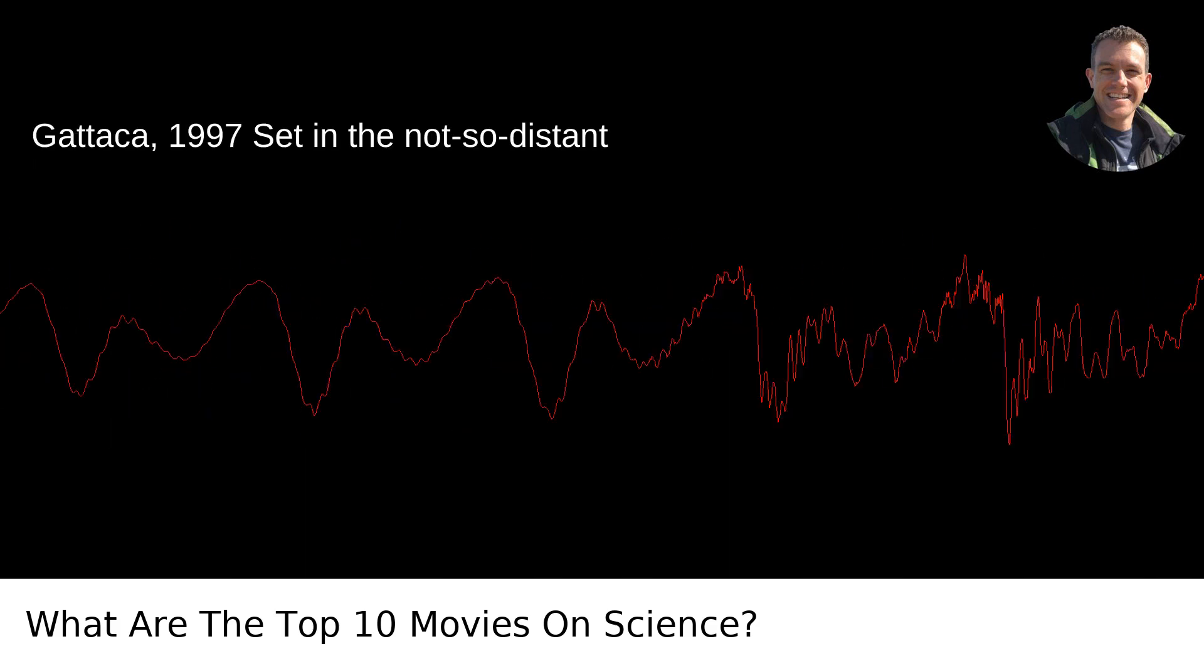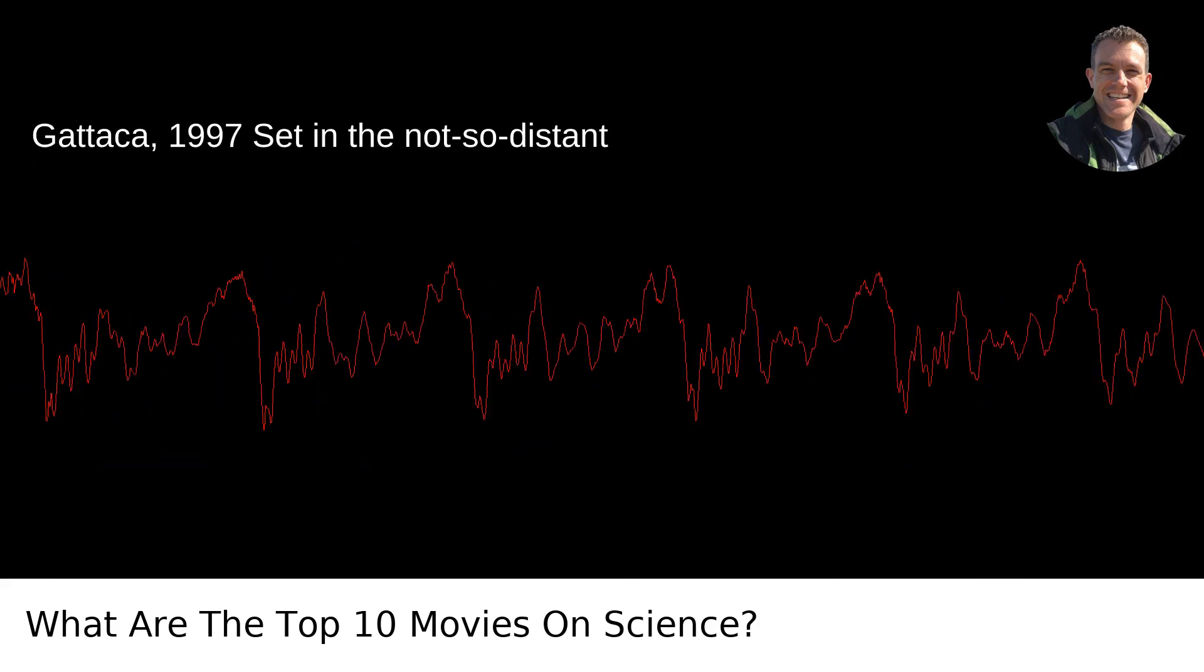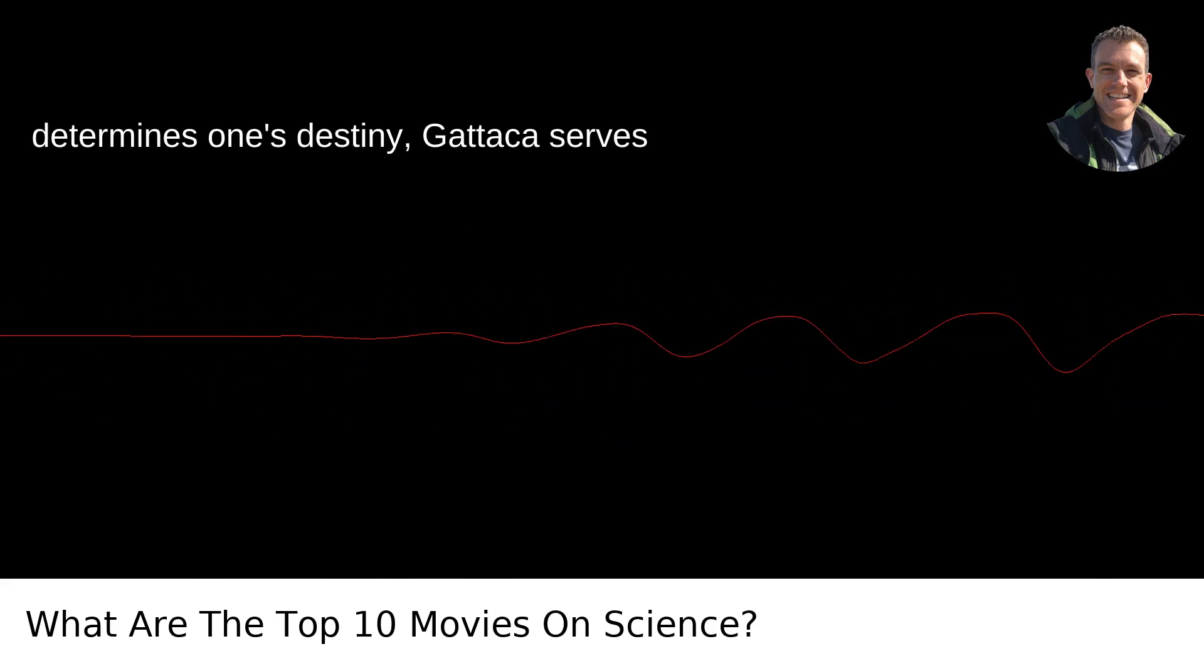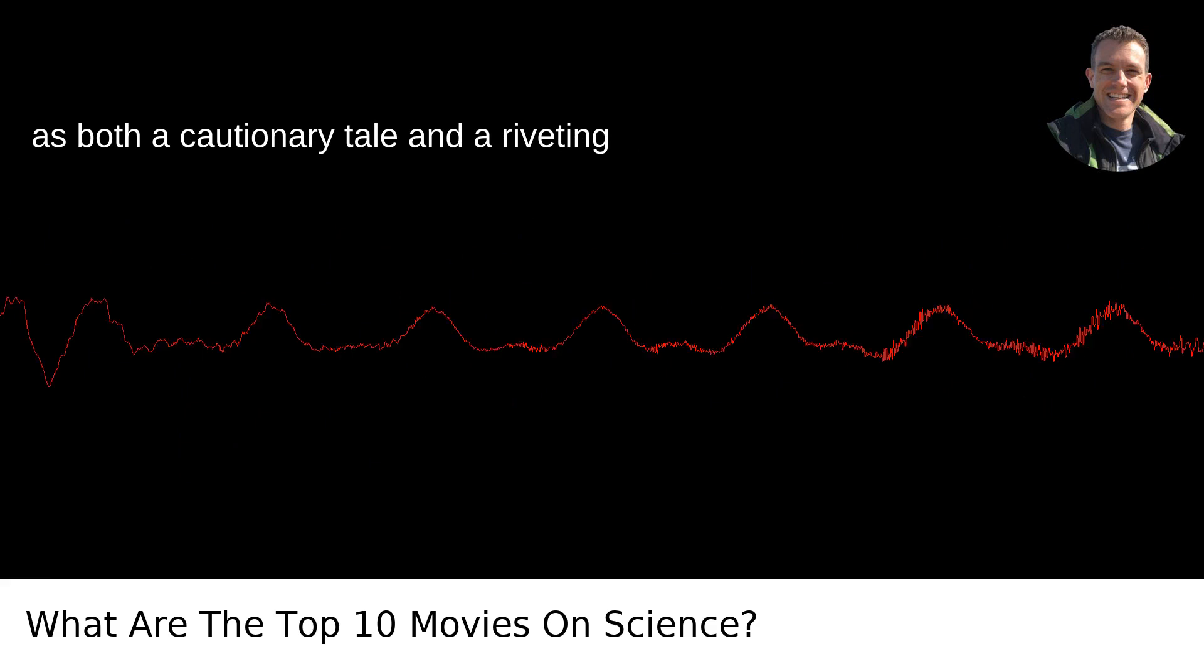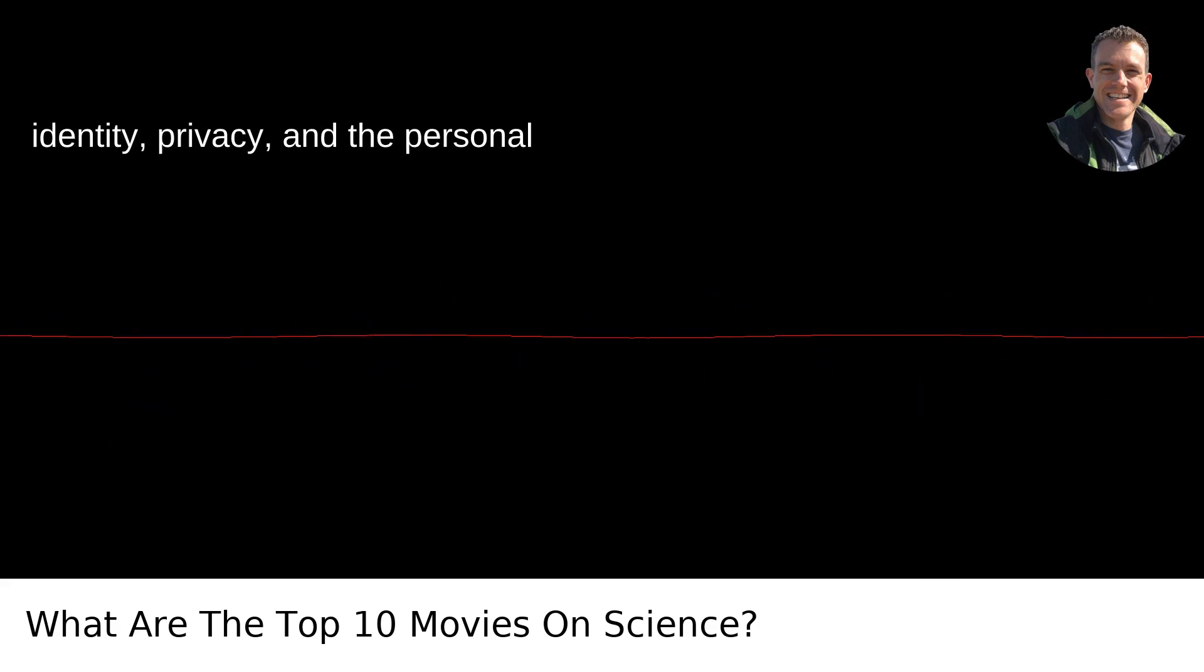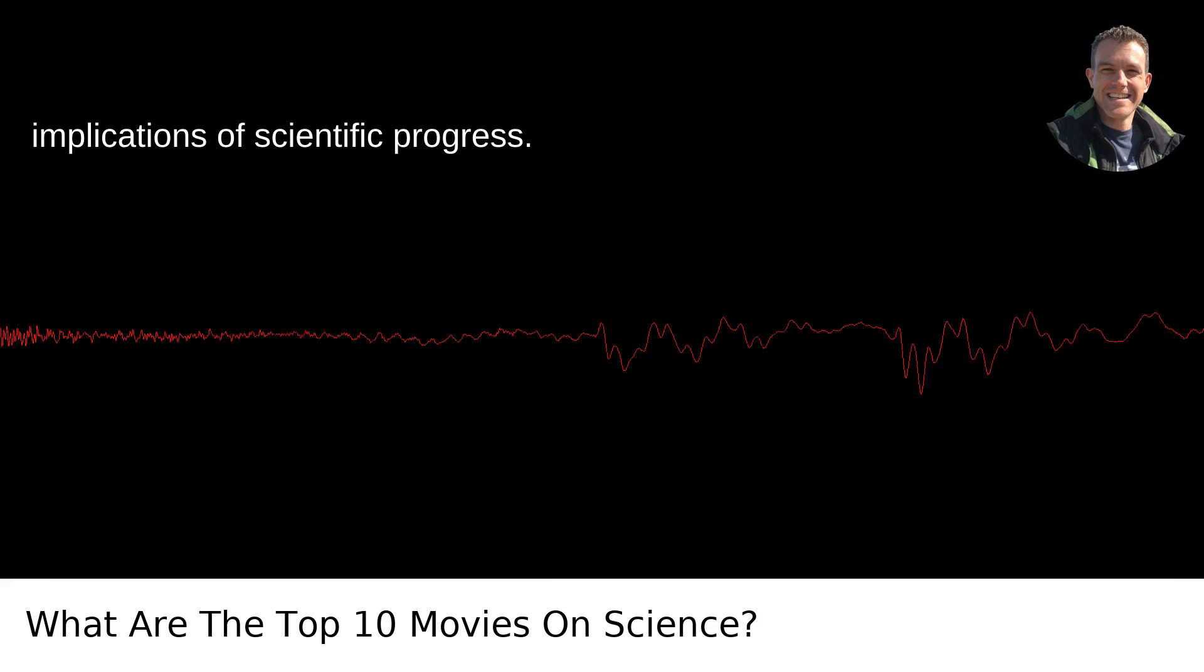10. Gattaca, 1997. Set in the not-so-distant future where genetic modification determines one's destiny, Gattaca serves as both a cautionary tale and a riveting sci-fi thriller that explores themes of identity, privacy, and the personal implications of scientific progress.